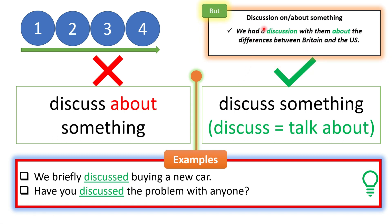Note that when we use 'discuss' as a verb, we don't use 'about.' But when we use 'discussion' — the noun form — we can use either 'on' or 'about.' For example: 'We had a discussion with them about the differences between Britain and the US.'